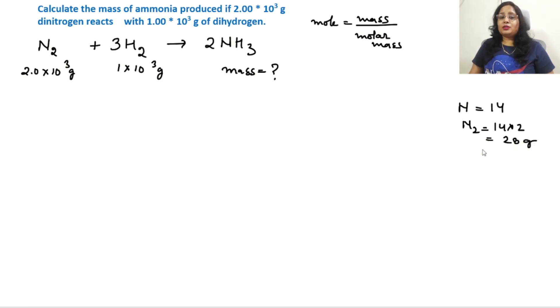For hydrogen, H is 1, so H₂ is 1 × 2 = 2 grams per mole.